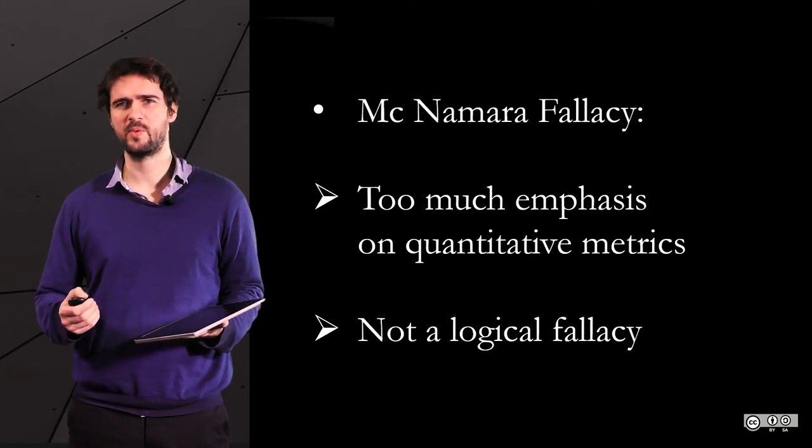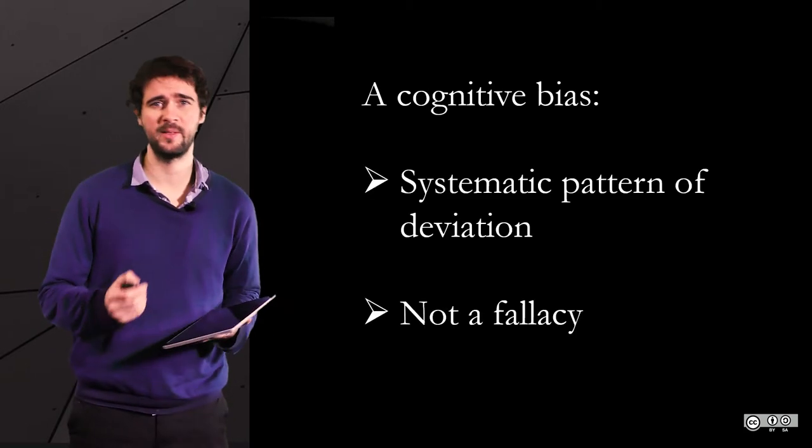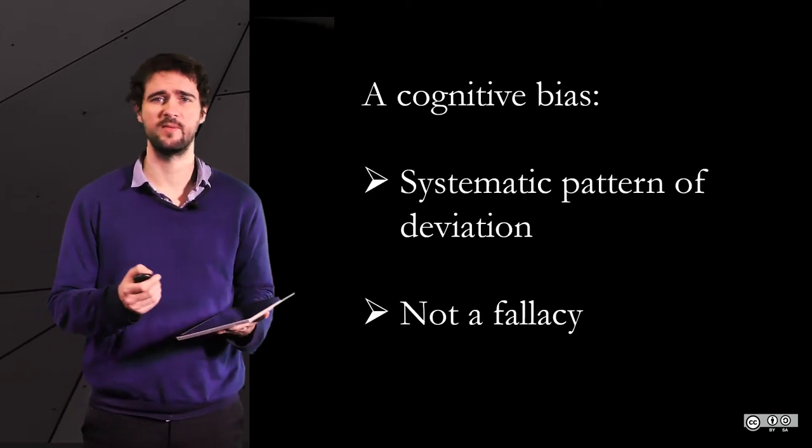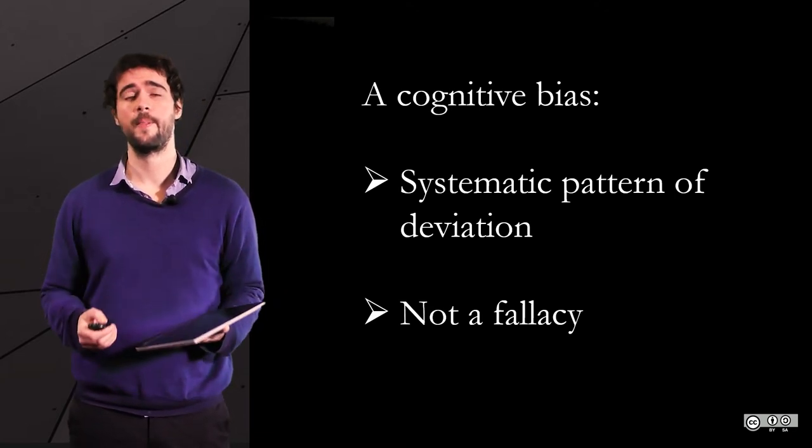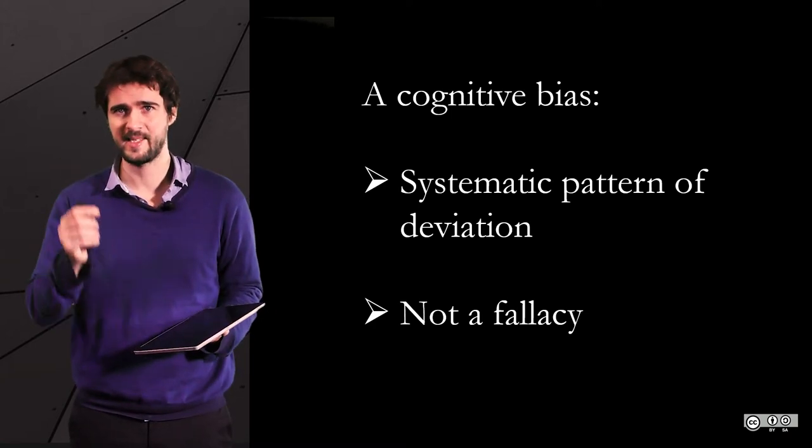Fallacies are not to be confused with cognitive biases. A cognitive bias is a systematic pattern of deviation in the way you treat information and make decisions. These biases increase the chance that you commit logical fallacies, but they are not fallacies themselves.